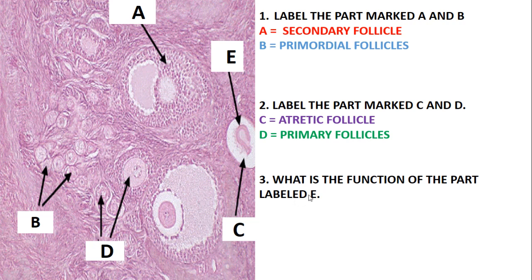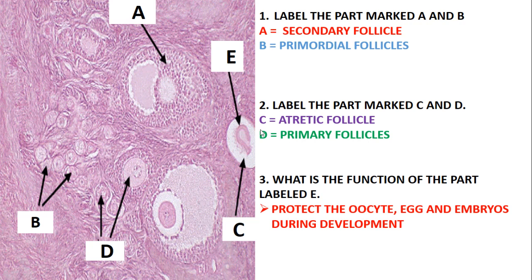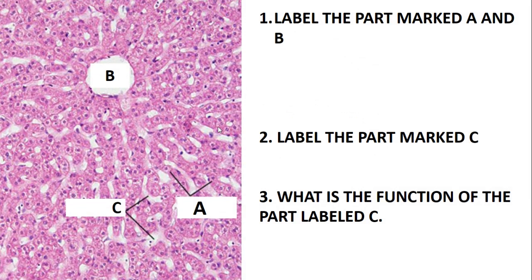What is the function of the part labeled E? This part is just the zona pellucida. It functions to protect the oocyte, egg, and embryo during development. It also regulates the interaction between the ovulated egg and sperm during and after fertilization. The zona pellucida protects the oocyte and controls the process of fertilization.